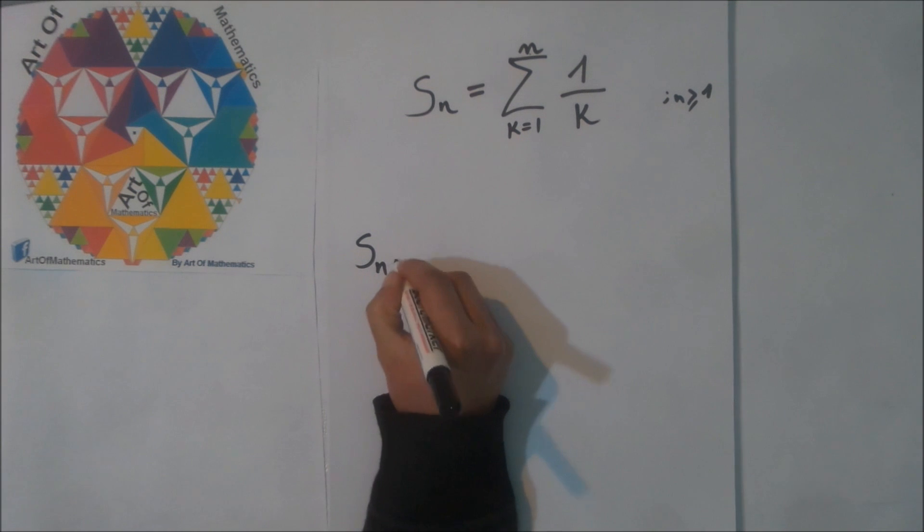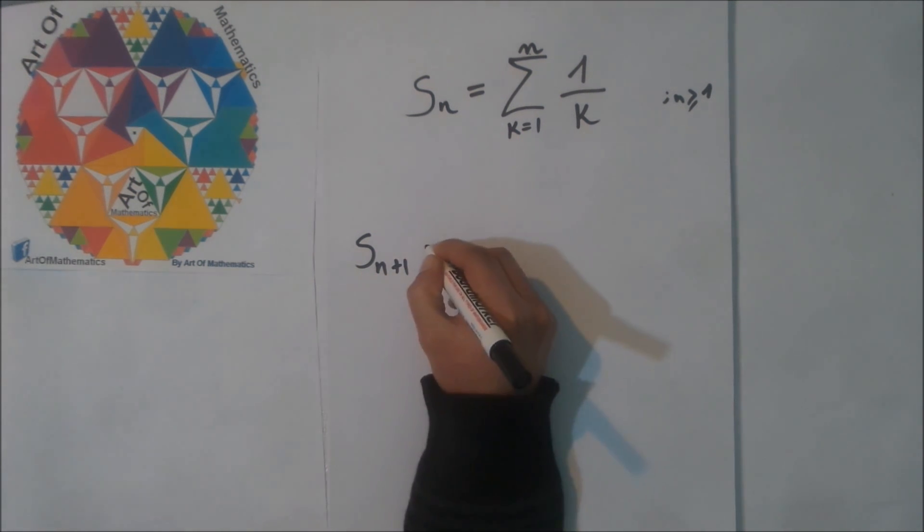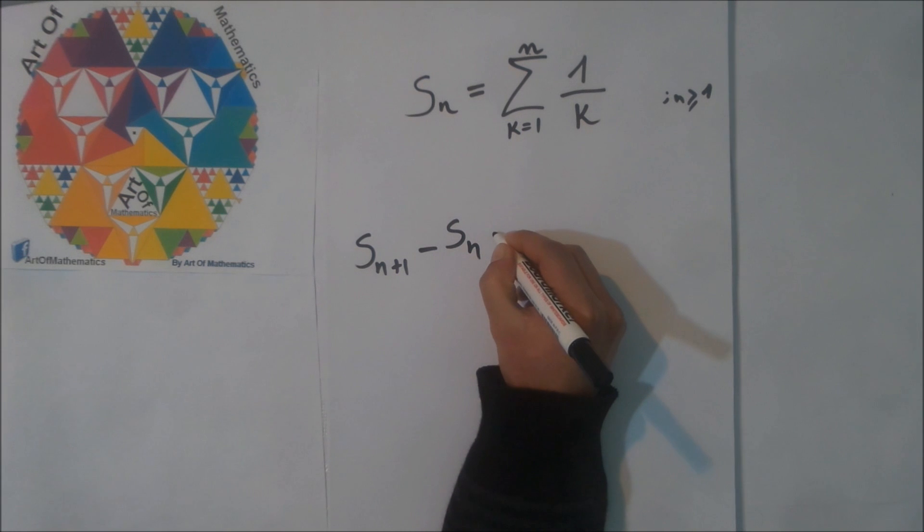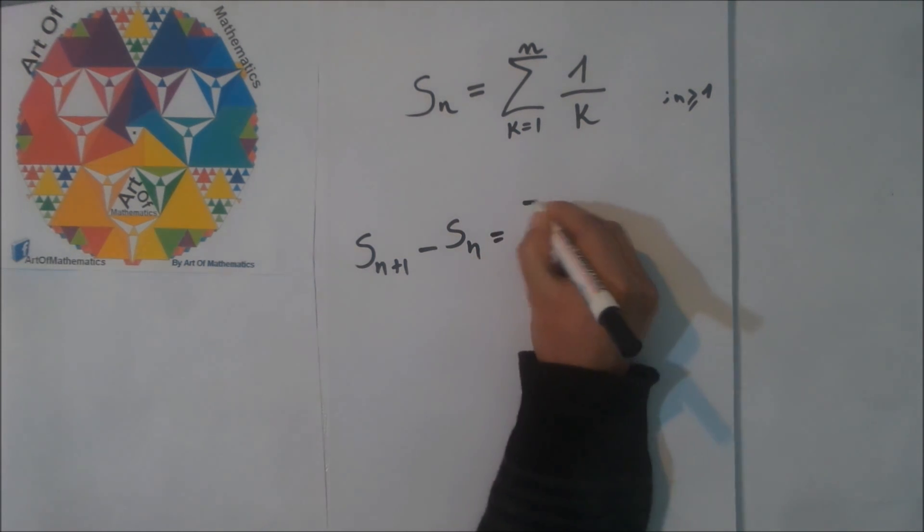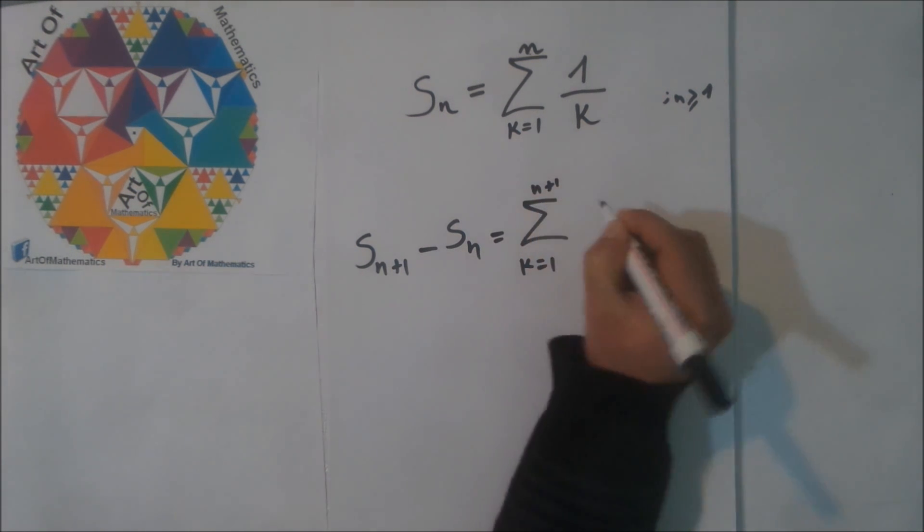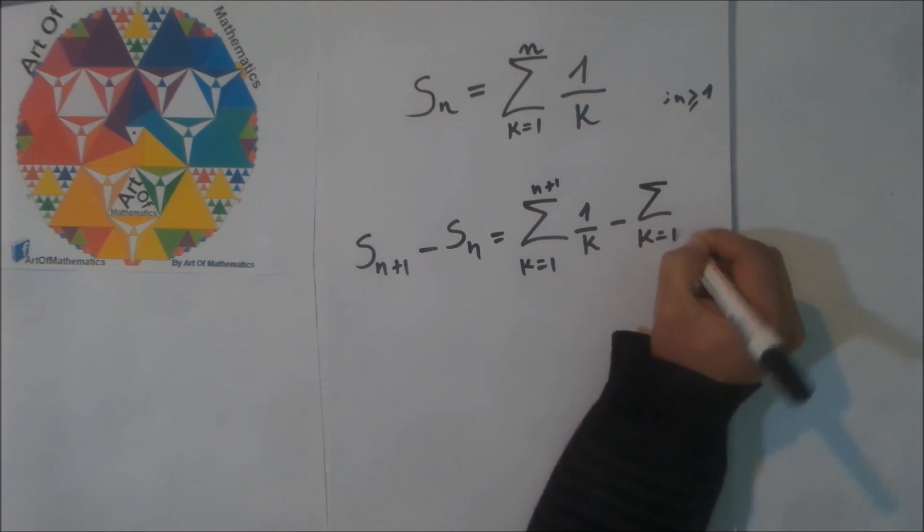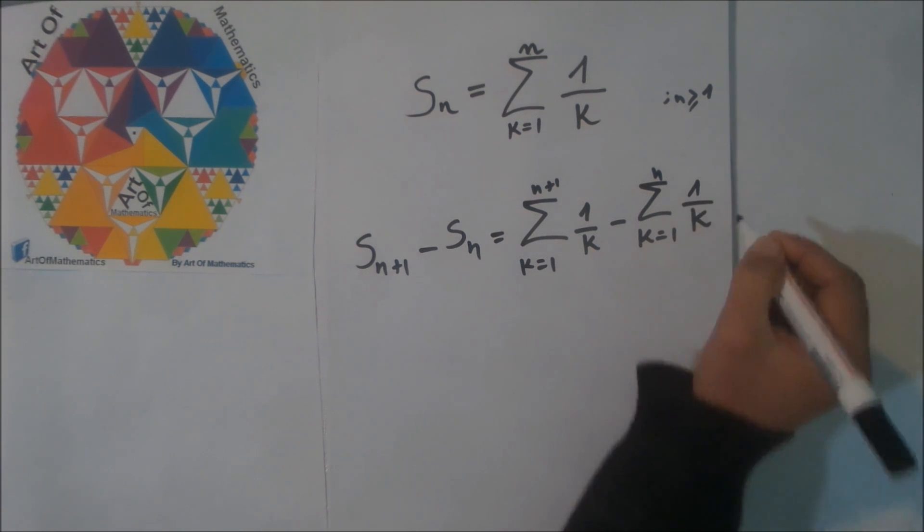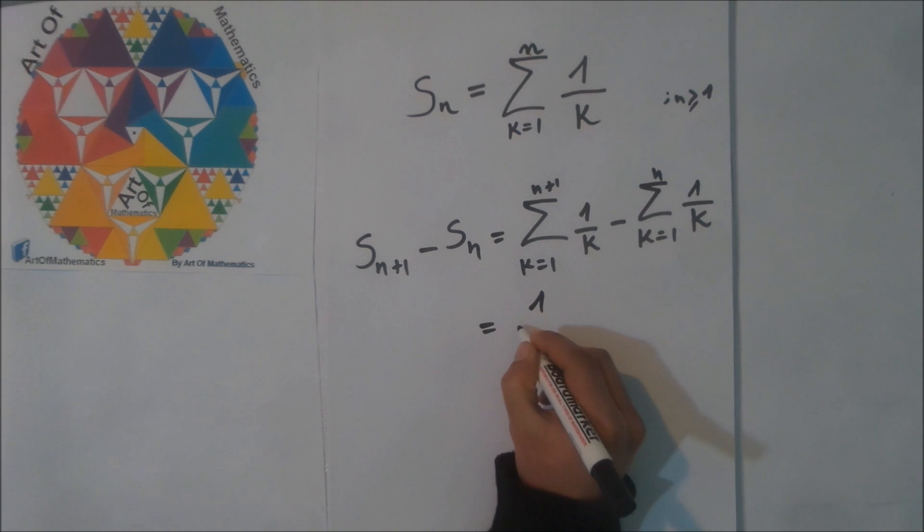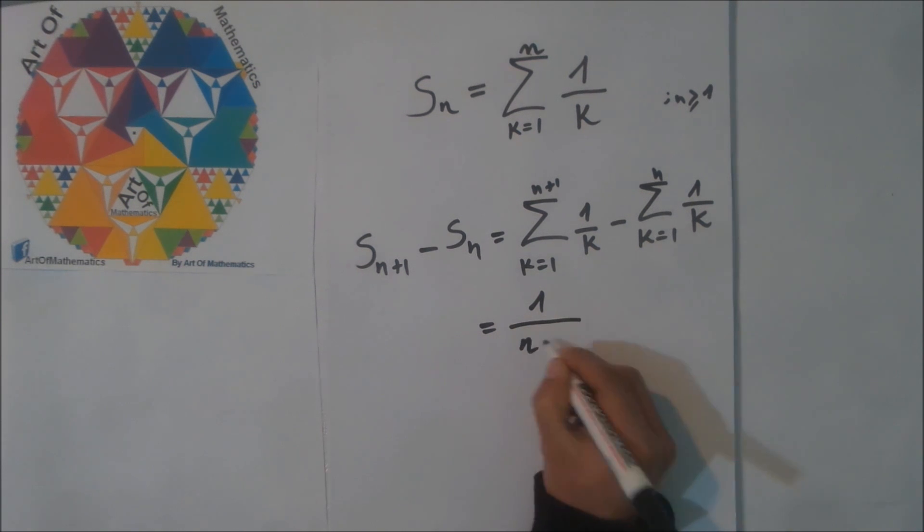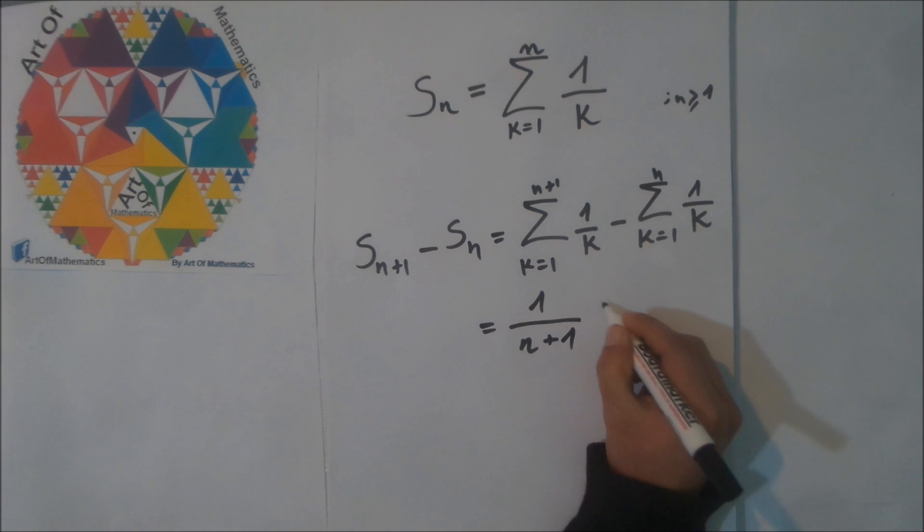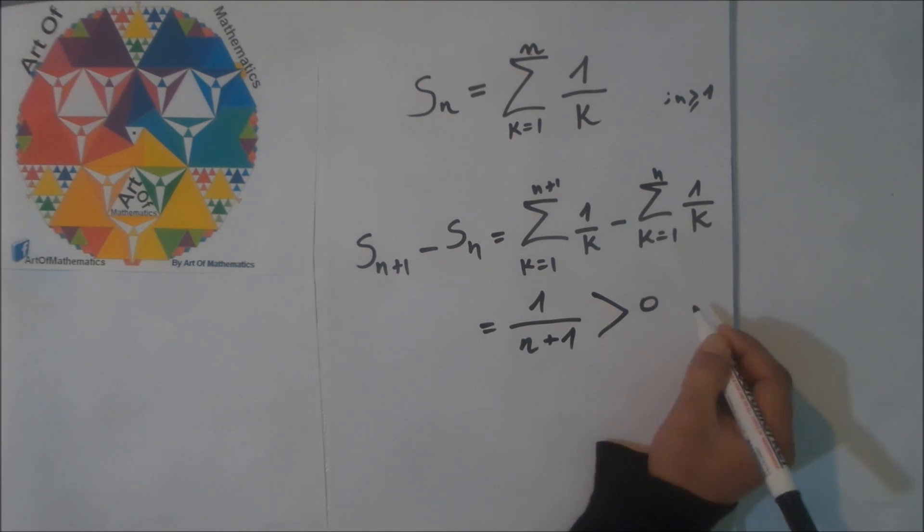The first thing is to calculate S(n+1) minus Sn. It is equal to 1 divided by n plus 1, which is a positive number.